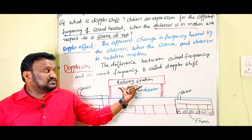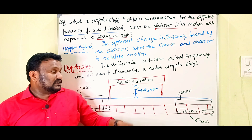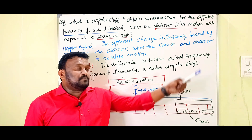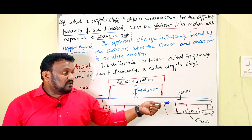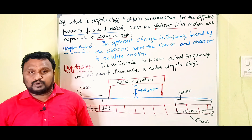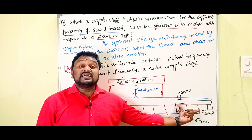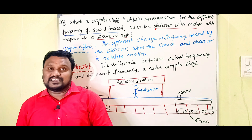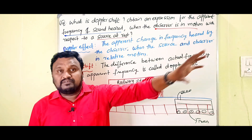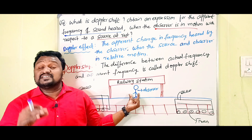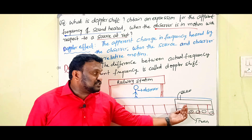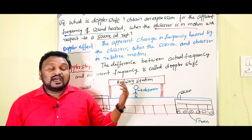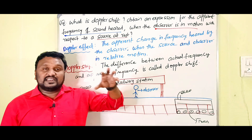Look at the diagram. Here is a railway station, and there is an observer waiting for a train at the railway platform. When the train is far off the railway station, the observer can hear a very small amount of sound. When a whistling train is far away from the railway station, the observer listens to less sound. When the train approaches the platform, the frequency of sound increases.